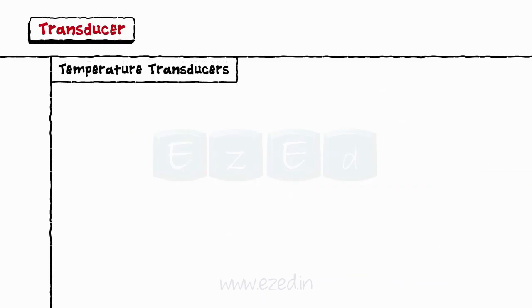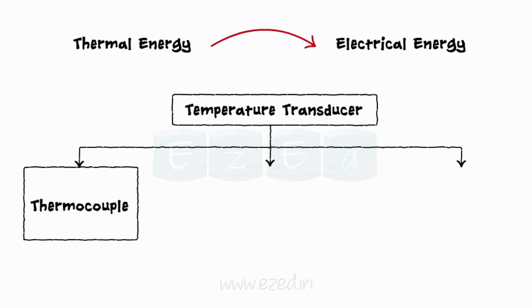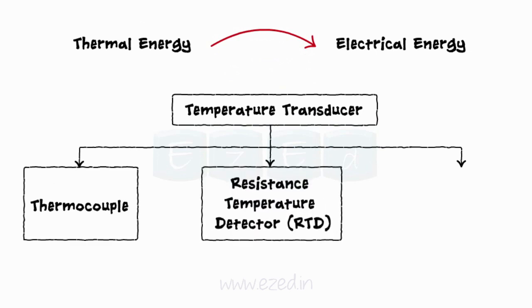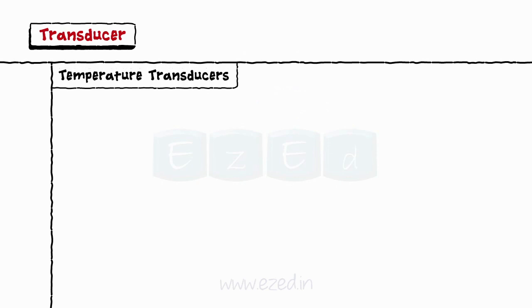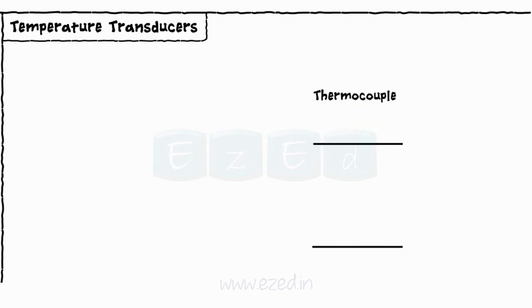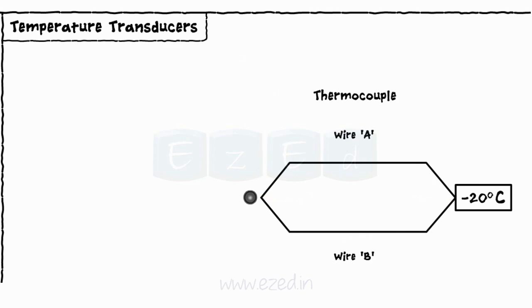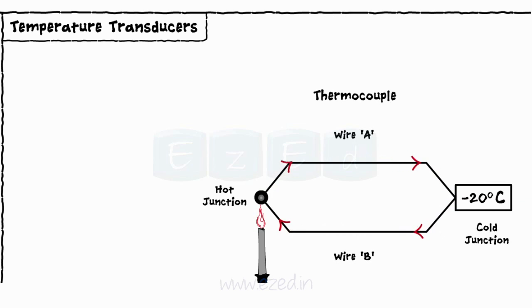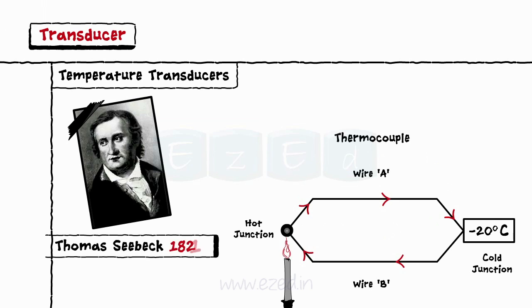Temperature transducers are devices which convert thermal energy into electrical energy. Different types of temperature transducers are thermocouples, RTD (resistance temperature detector), thermistor, etc. The first temperature transducer we will study is a thermocouple. A thermocouple circuit is formed when two dissimilar metals are joined at both ends and there is a difference in temperature between the two ends. The difference in temperature creates a small current, and is called the Seebeck effect, after Thomas Seebeck who discovered this phenomenon in 1821.